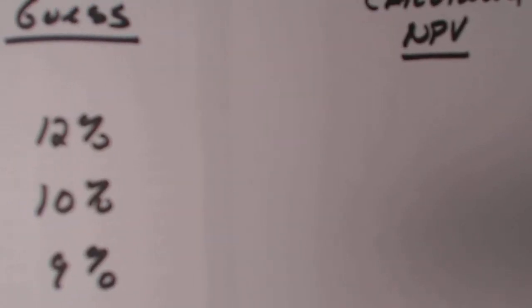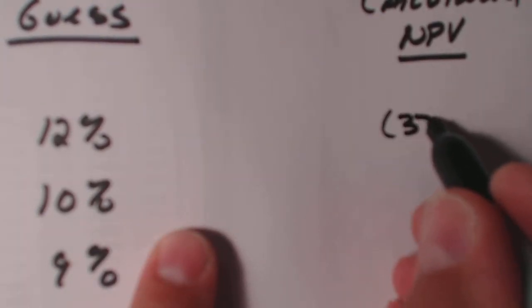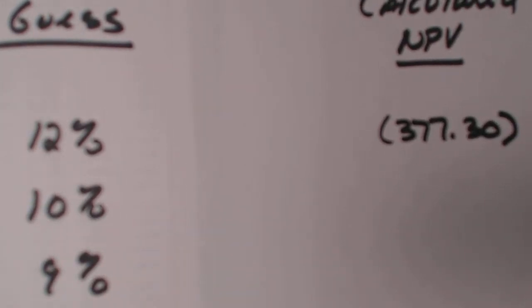And then at 12%, that number came in at a negative 377.30. So at 12%, if I go back to my little chart here, the NPV was negative 377.30.